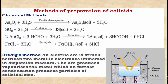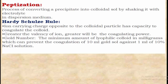Methods of preparation of colloids include chemical methods — double decomposition, oxidation, reduction, and hydrolysis — and physical methods such as the Bredig's arc method, which is used to prepare metal sols like gold sol, platinum sol, and silver sol. Peptization is the process of converting a precipitate into a colloidal sol by shaking it with an electrolyte in a dispersion medium.